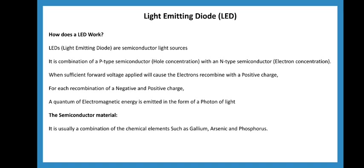Light emitting diodes are semiconductor light sources. It is a combination of P-type semiconductor which has hole concentration and N-type semiconductor with electron concentration. When sufficient forward voltage is applied, it will cause the electrons to combine with positive charge. For each recombination of negative and positive charge, a quantum of electromagnetic energy is emitted in the form of a photon of light.